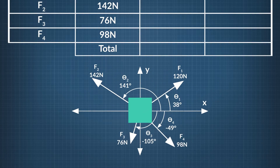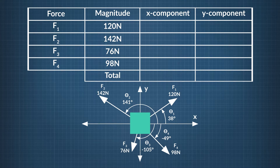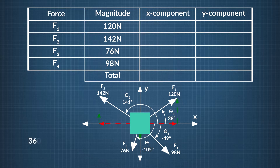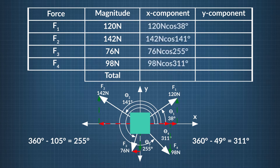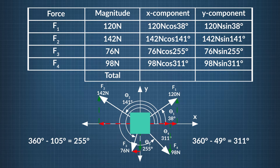We can use a table to keep track of our work. We can look at the angle of each of the four forces to figure out the x and y components of each. The easiest way to find the components of each force is to find their angles with respect to the positive x axis. The first force, F sub 1, is directed at an angle of 38 degrees from the positive x axis. F sub 2 is at 141 degrees. F sub 3 is at 360 minus 105 degrees, or 255 degrees. And F sub 4 is pointed at 360 minus 49 degrees, or 311 degrees. For each force, the x component is found by taking the cosine of the force angle and multiplying it by the force magnitude. And the y component is found by taking the sine of the force angle and multiplying it by the force magnitude.